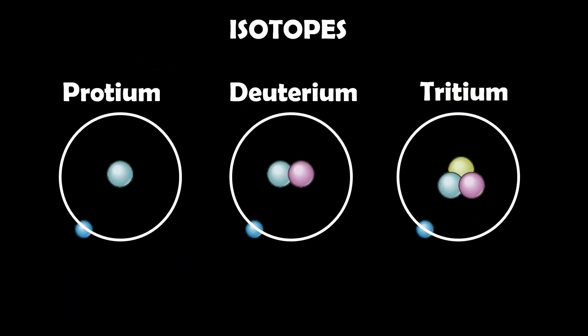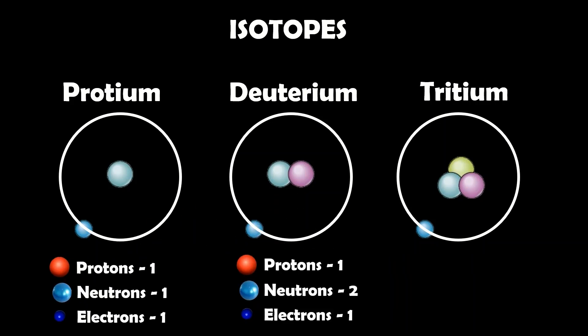For example, hydrogen has three isotopes: protium, deuterium, and tritium. Protium has one proton, one neutron, one electron. So it's normal, like normal hydrogen.